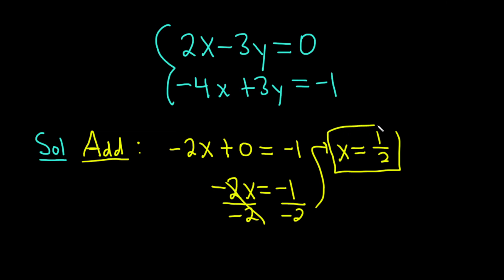Now that we have the value of x, we can find the value of y by taking this x and using either equation. Let's use the first equation. So plugging in this x into the first equation, we have 2 times 1 half minus 3y, and that's equal to 0.